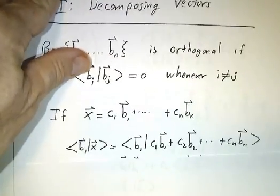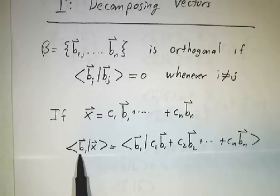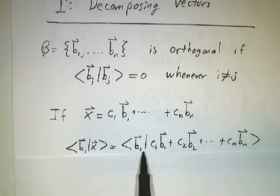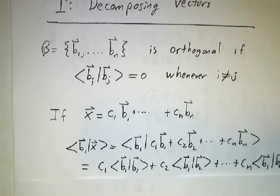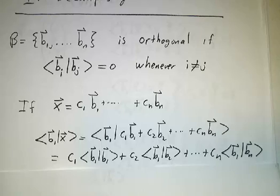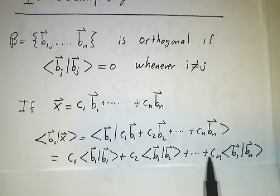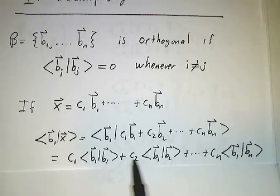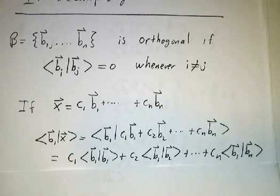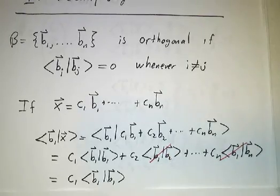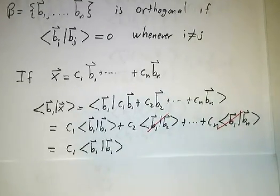If we take the inner product of b1 with x, that's the inner product of b1 with this whole combination. Because the inner product is linear, that's c1 times the inner product of b1 with itself, plus c2 times the inner product of b1 with b2, and so on. But the inner product of b1 with b2 is zero, the inner product of b1 with b3 is zero, the inner product of b1 with bn is zero. All these terms go away, and you're left with just c1 times the inner product of b1 with itself.